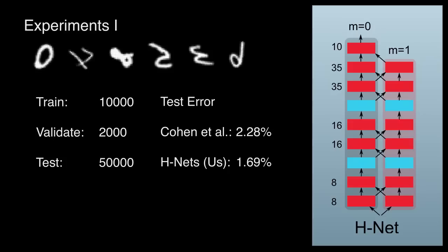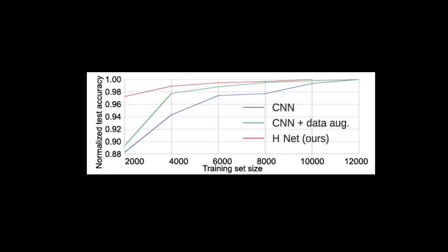Hnets are also very data efficient. We reduced the number of training examples to just 2,000 images, seeing a drop in accuracy of 2.5% compared to competing CNNs which dropped by over 11%. This is because regular CNNs require most of that data to learn to cope with rotations which Hnets take as a given.